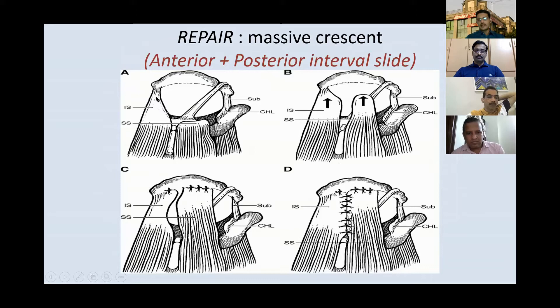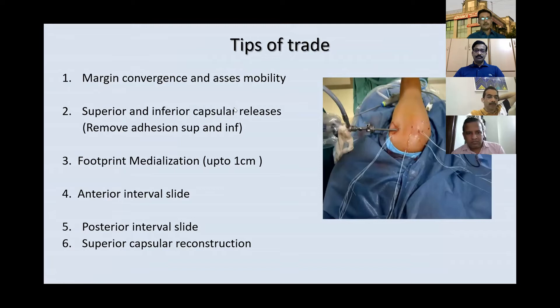For practical purposes, we rely a lot on margin convergence. We assess mobility of the cuff edges — reducibility is often greater from posterior to anterior, which you need to keep in mind. You need to do superior and inferior capsular releases, removing adhesions from both sides. You can medialize the footprint up to a centimeter. Then you have three options, all controversial: anterior interval slide, posterior interval slide, and superior capsular reconstruction.